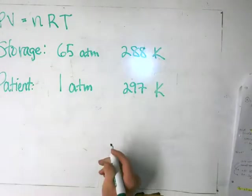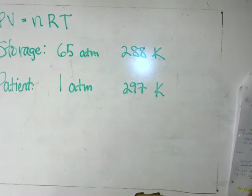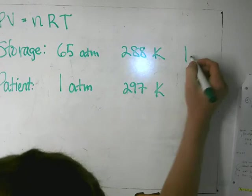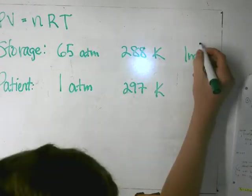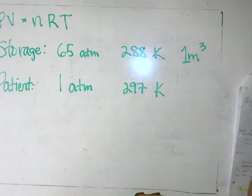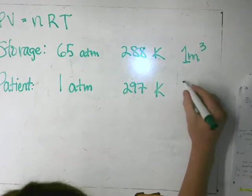The volume of oxygen in the storage tanks is one cubic meter, which is pretty important here. The question is: what volume of oxygen does the amount of oxygen in the tanks occupy at the conditions of the patient's room? We don't know the volume that the oxygen occupies in the patient's room, so let's call that V sub P — volume of the patient's room.